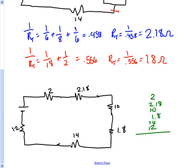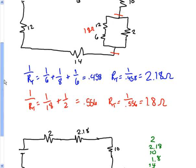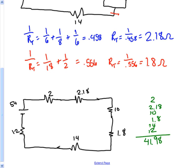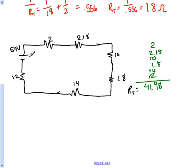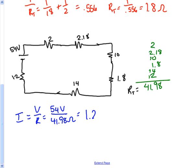Adding all resistors in series: 2 + 2.18 + 10 + 1.8 + 14 + 12 gives a total resistance of 41.98 ohms. I'll leave it at 41.98 rather than rounding to 42 to avoid errors later. The total voltage is 54 volts, so the current is V/R = 54/41.98, which gives us a total current of 1.29 amps.